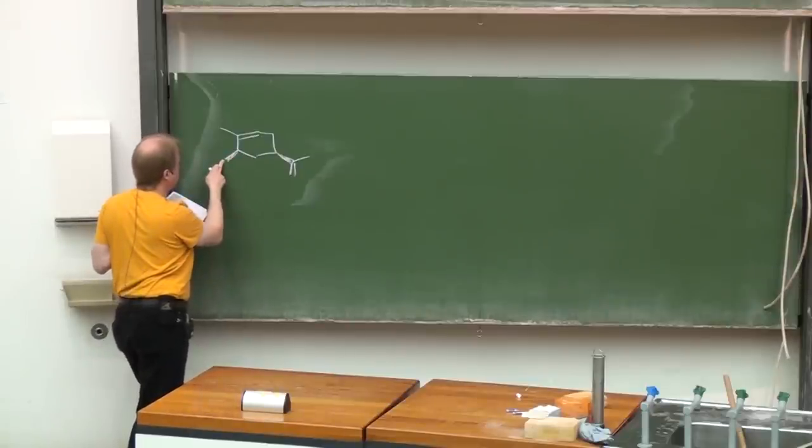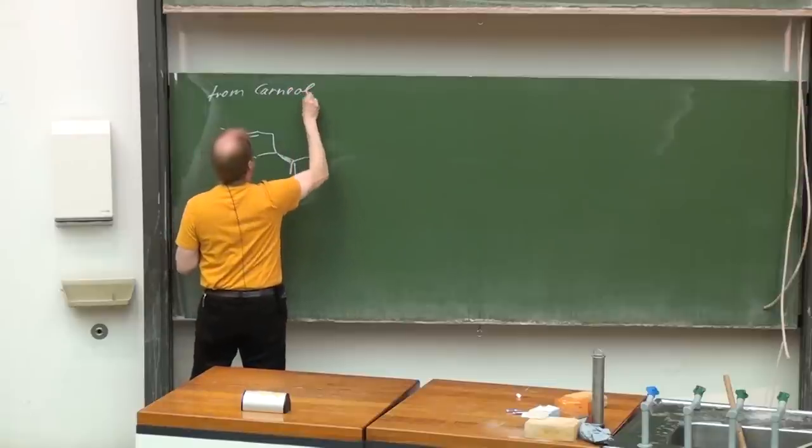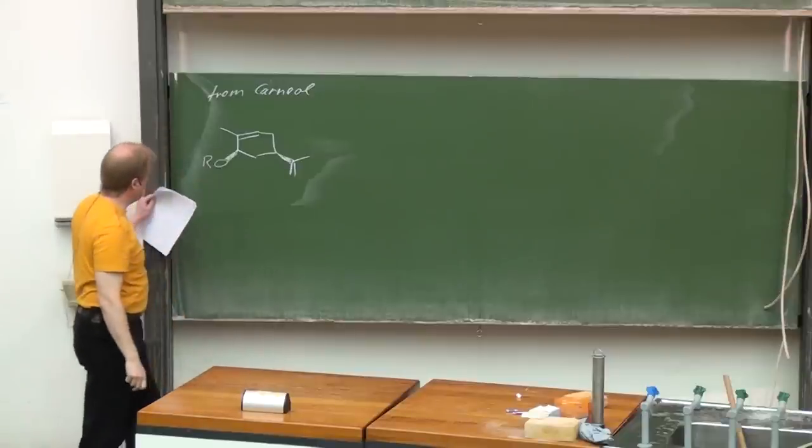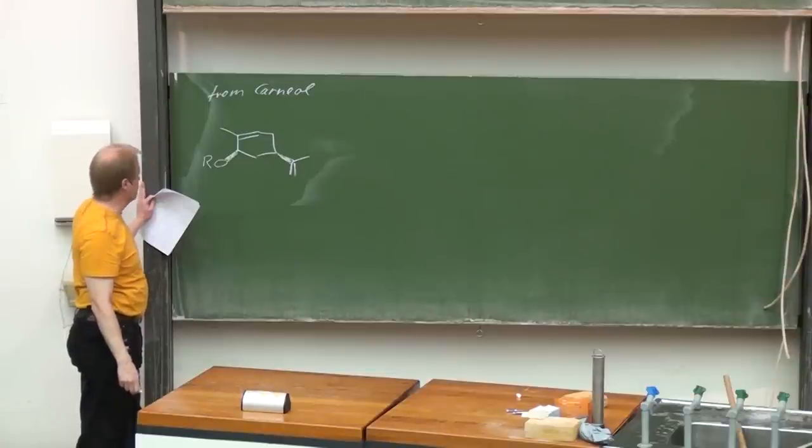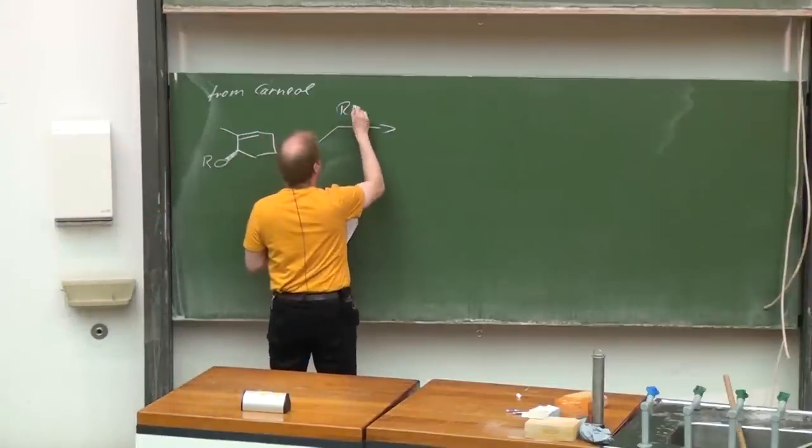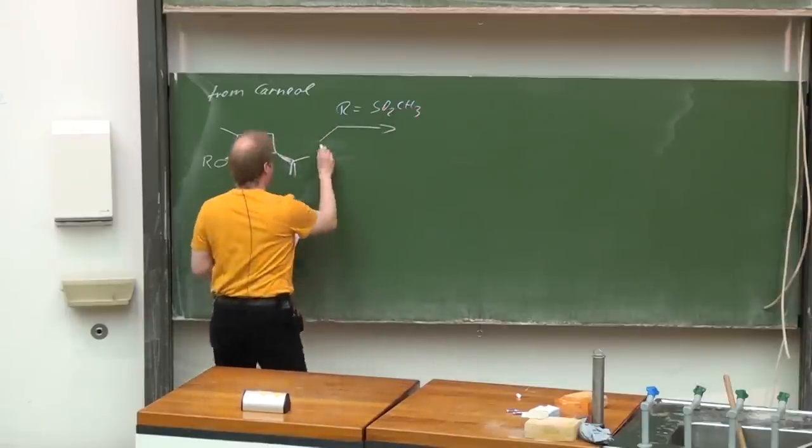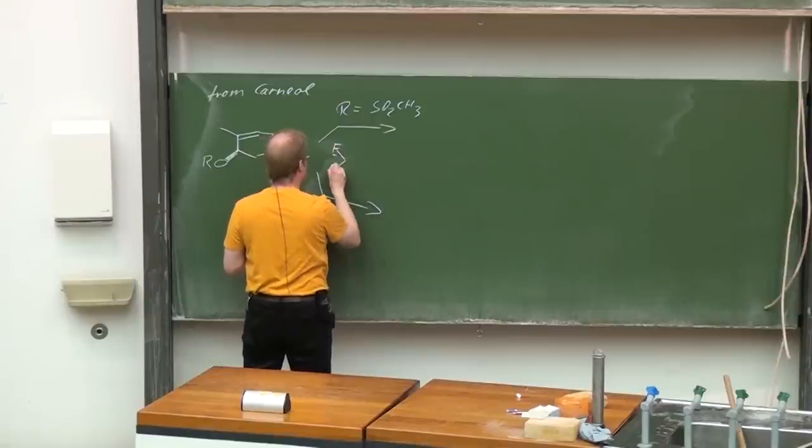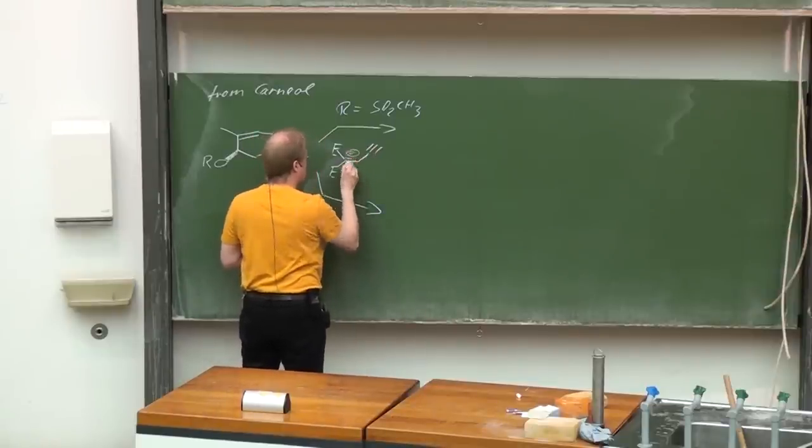Now we have a substituent at that oxygen that transfers the hydroxyl group into a good leaving group or a medium leaving group. R is a mesyl group, SO2CH3. And then the nucleophile, as a nucleophile already this kind of malonate—that deprotonated malonate—can be applied in THF.